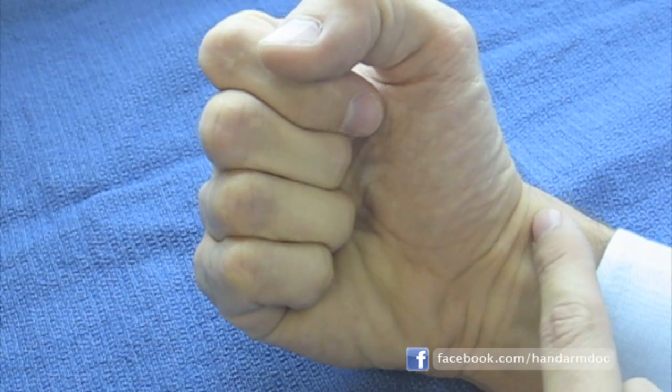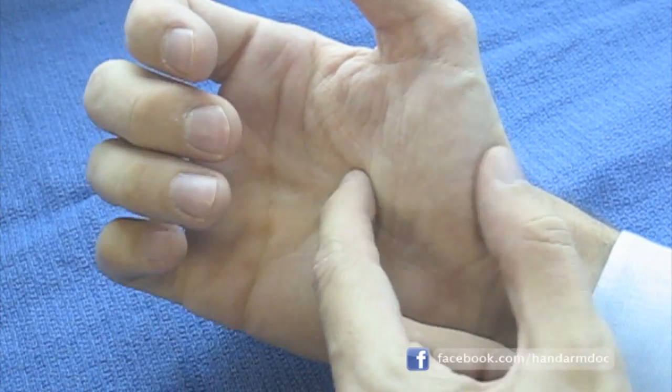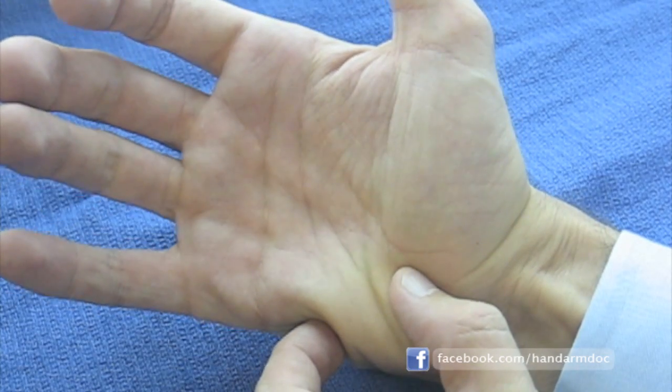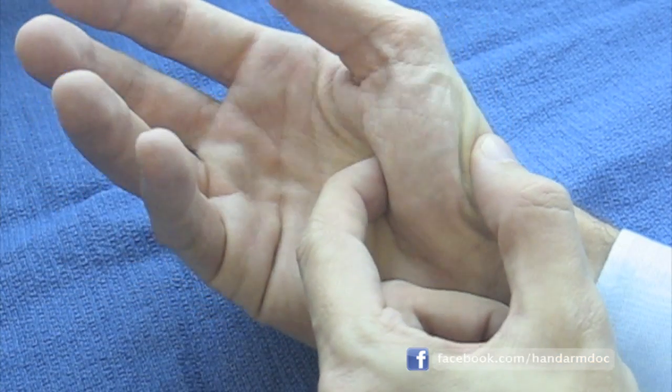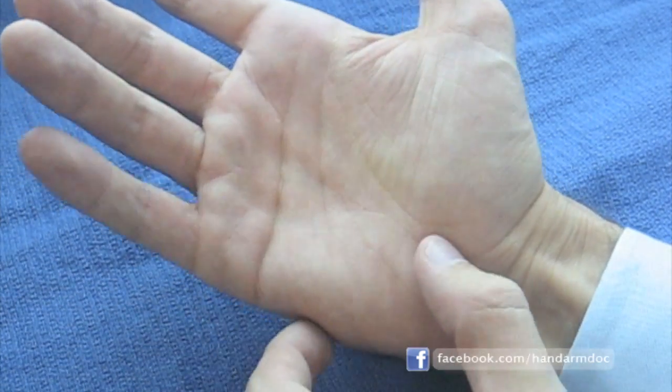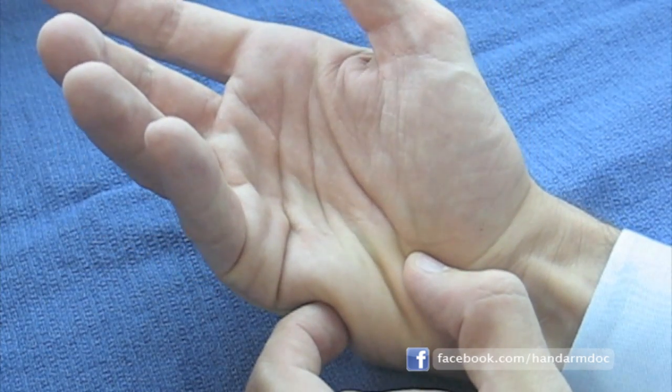Thenar and hypothenar are two terms that describe the fleshy mass of skin, fat, and muscle on the thumb side and the small finger side of the hand.